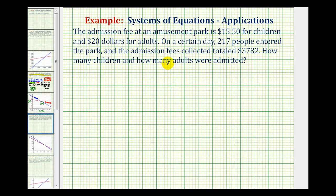So to solve this problem, we're going to set up a system of equations and then solve the system. We're trying to find how many children and how many adults entered the park on this day. So we have two unknown values, so let's let x equal the number of children and we'll let y equal the number of adults.